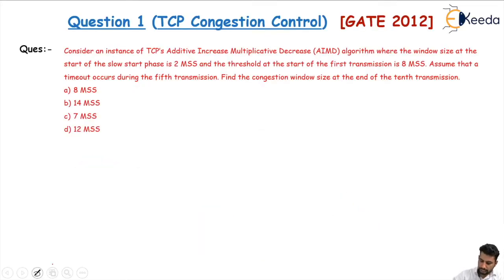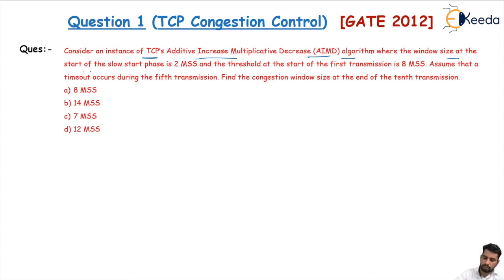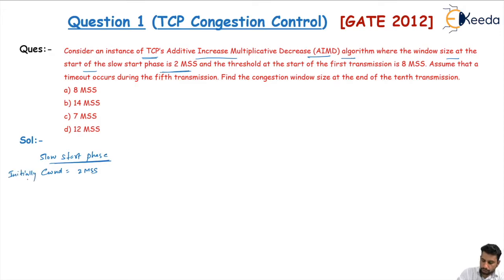Here we are given a considered instance of the TCP Additive Increase Multiplicative Decrease algorithm. TCP congestion control uses AIMD for congestion control, where the window size at the start of the slow start phase is 2 MSS. Initially the congestion window is equal to 2 MSS and the slow start threshold at the start of the first transmission is equal to 8 MSS.